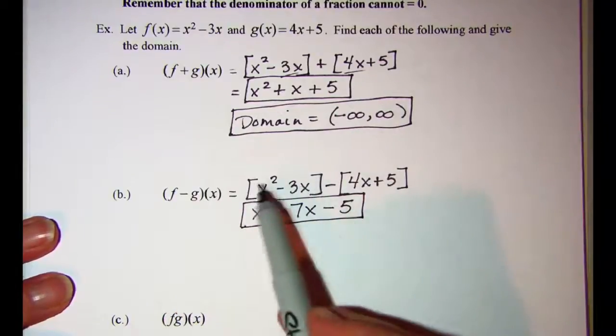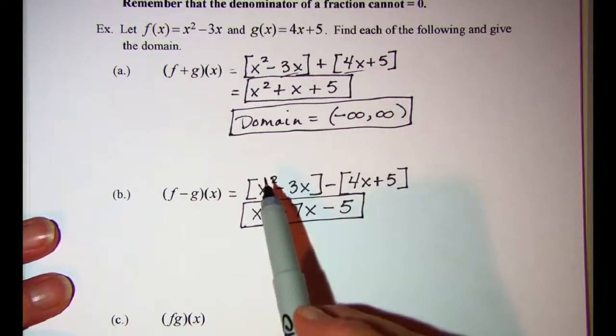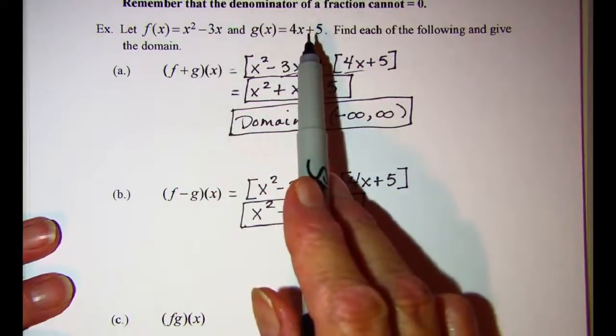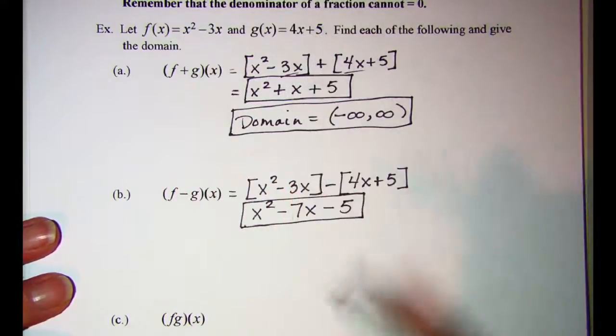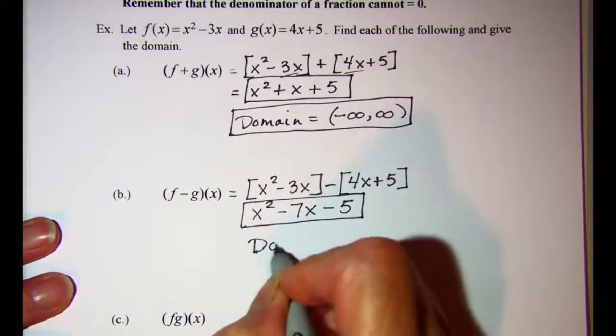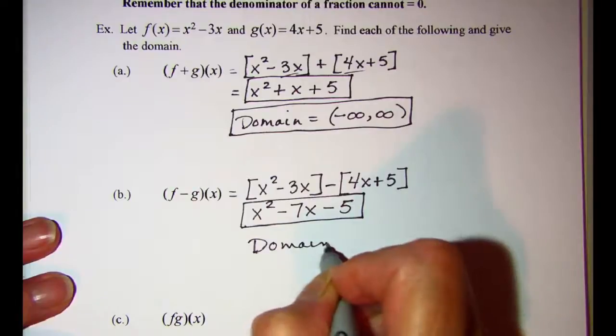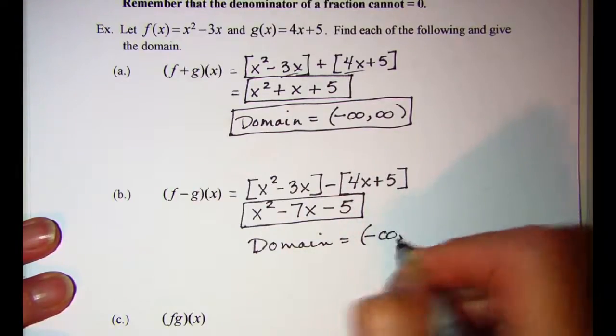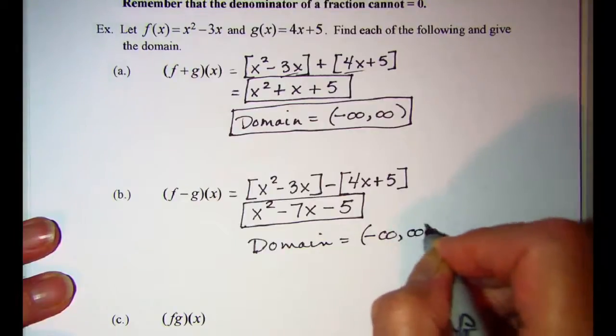Again, our domain for f of x is all real numbers and the domain for g of x is all real numbers. So our domain for this difference is all real numbers, which we'll show as negative infinity to positive infinity.